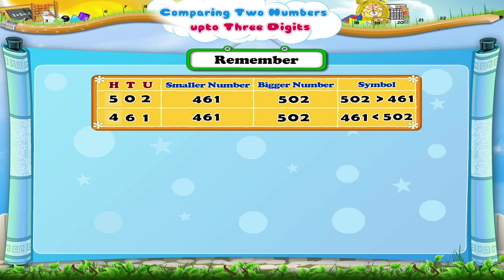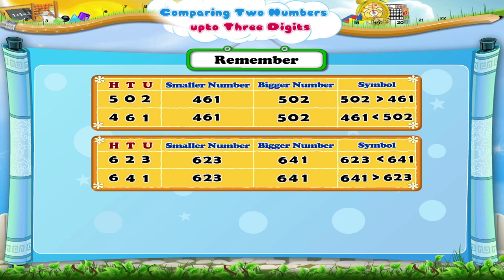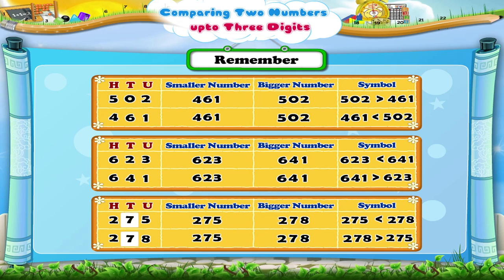So you must remember: we compare the digits in the hundreds place first. If they are the same, we compare the digits in the tens place. If the digits in the tens place are also the same, we compare the digits in the units place.